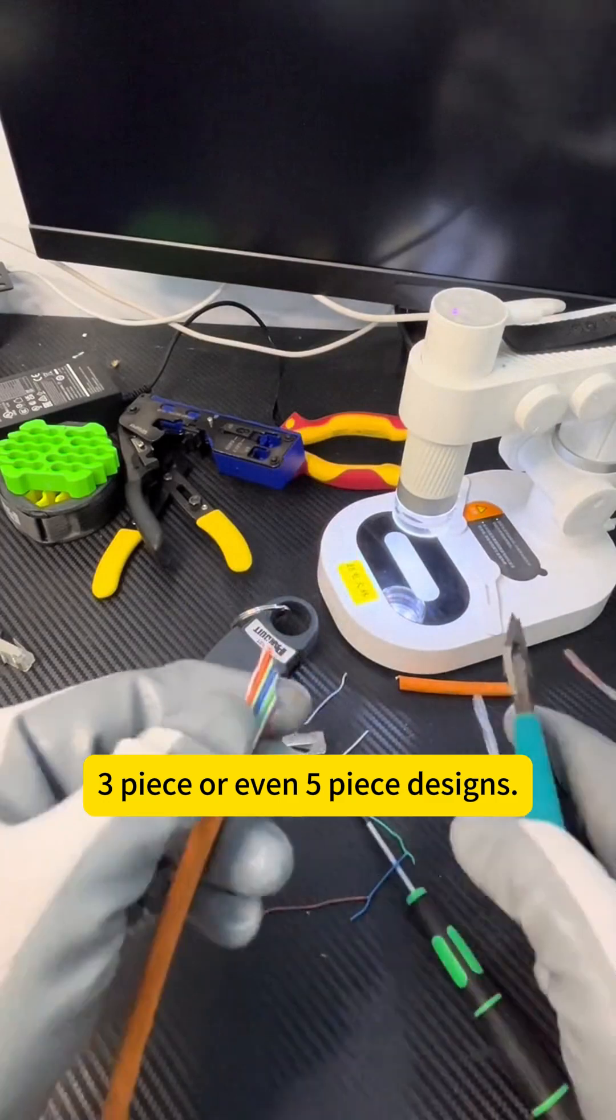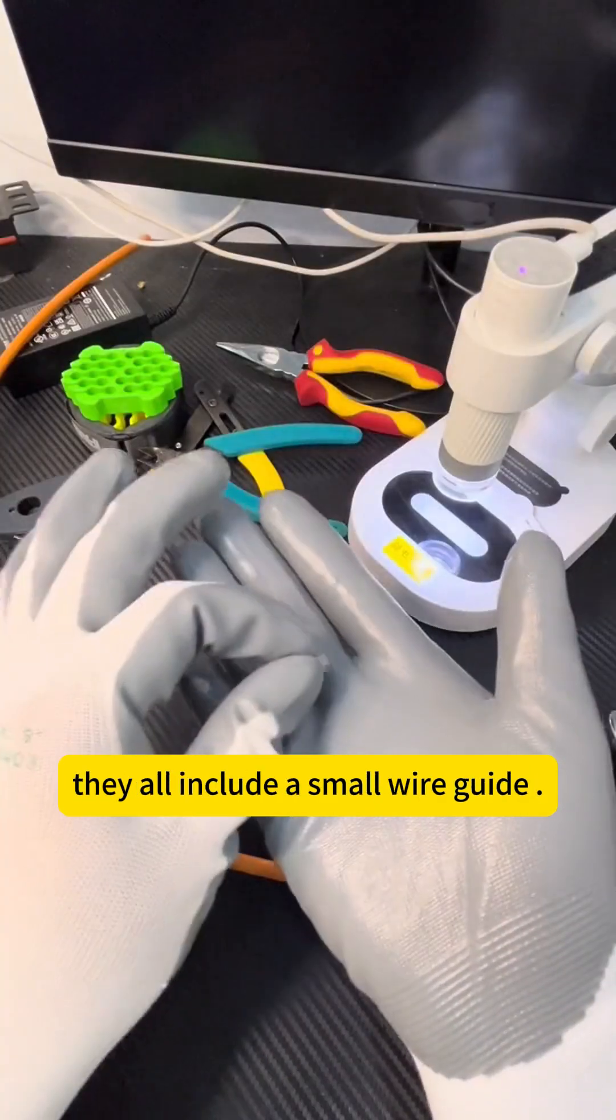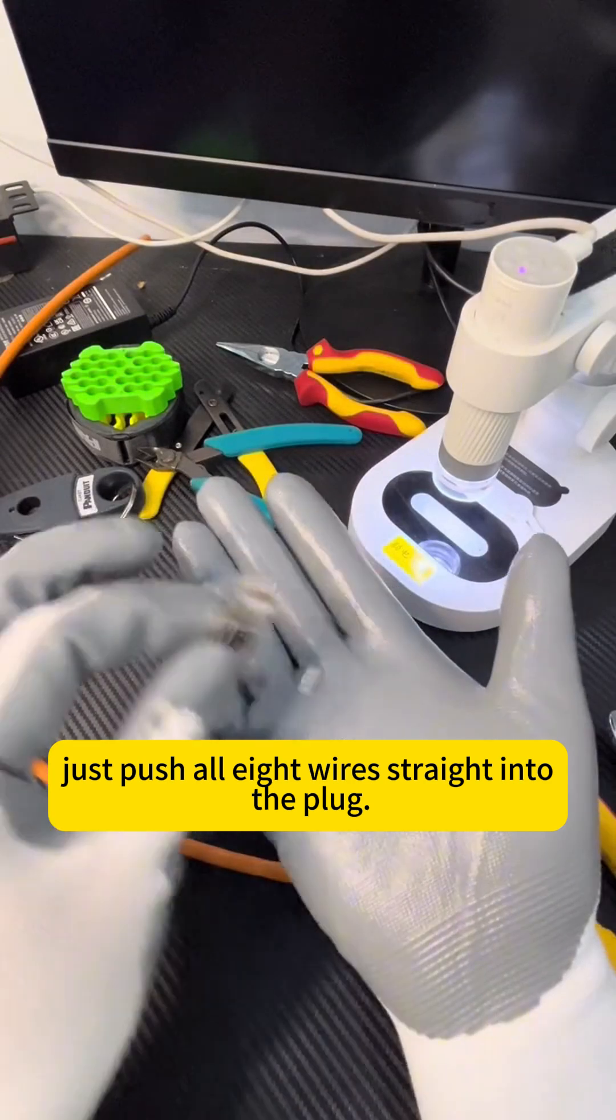No matter which type you're using, they all include a small wire guide. For thinner CAT5 cables, you can just push all eight wires straight into the plug.